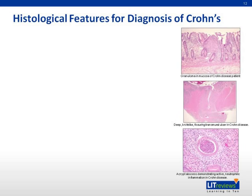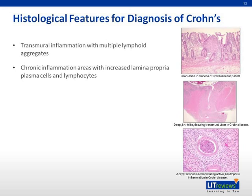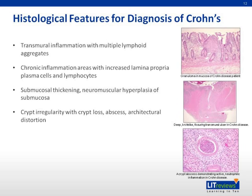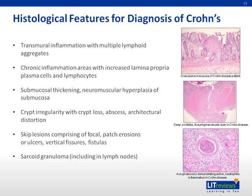Histological features for diagnosis of Crohn's. Microscopically, the features include transmural inflammation with multiple lymphoid aggregates, chronic inflammation with increased lamina propria plasma cells and lymphocytes, submucosal thickening, and neuromuscular hyperplasia of the submucosa. Crypt irregularity with crypt loss, abscess, and architectural distortion are also seen. Skip lesions comprising focal patchy erosions or ulcers, vertical fissures, and fistulas are characteristic. Sarcoid-like granulomas — including in lymph nodes, non-necrotizing, well-circumscribed groups of epithelioid histiocytes, with or without accompanying Langhans-type giant cells — and fissures are also noted.